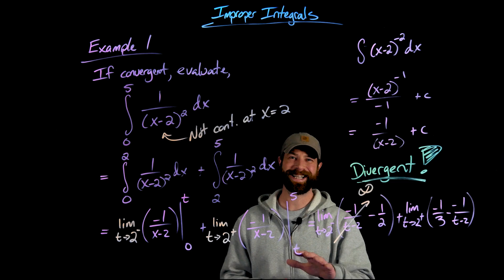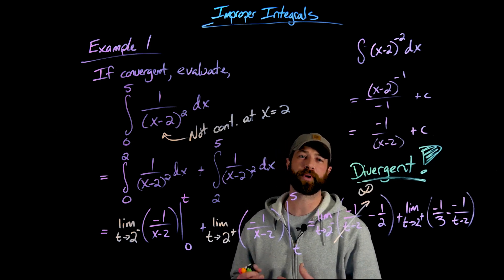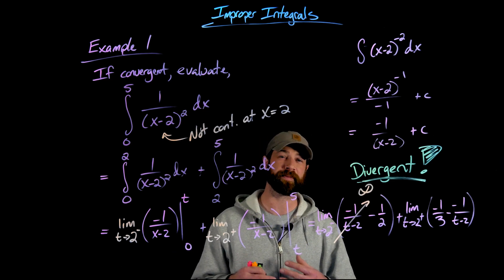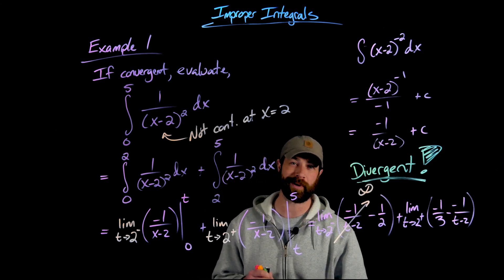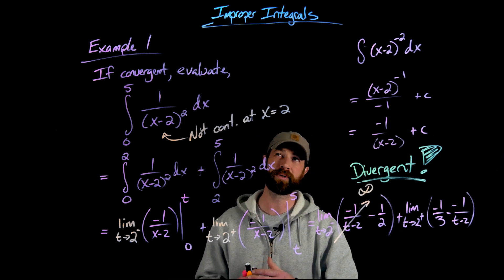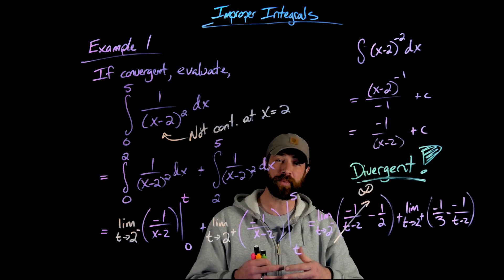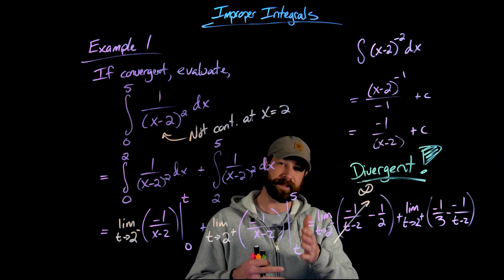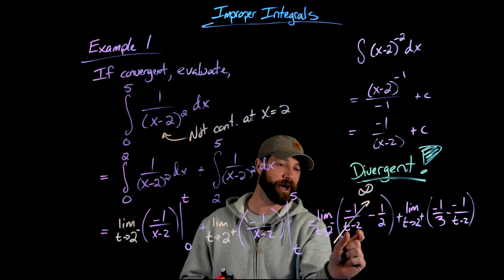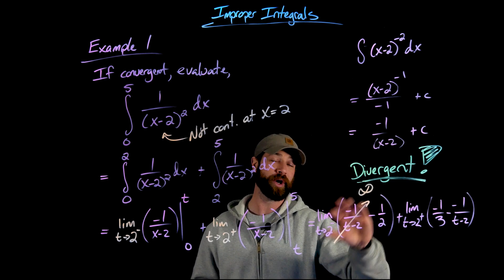In this section, we're not going to have any new integration techniques — most integration will be straightforward. The main focus is applying these limit statements and reviewing limit rules. We're often not applying L'Hôpital's rule here; instead, we're dealing with limits at vertical asymptotes or non-continuous points. The key argument is: if the numerator stays constant and the denominator goes to zero as t approaches 2, the value of the ratio goes to infinity, making the integral divergent.